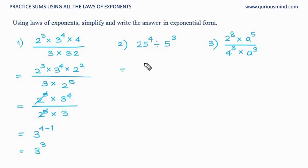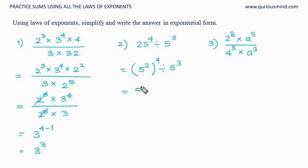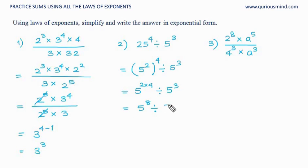Here, 25 raised to 4 divided by 5 raised to 3. We can see that 25 is actually the square of 5, so it is 5 squared whole raised to 4, divided by 5 raised to 3. Applying the rule — a raised to m whole raised to n equals a raised to m into n — we get 5 raised to 8 divided by 5 raised to 3. Same base, so base remains same; division means powers subtract: 8 minus 3, and the answer is 5 raised to 5.